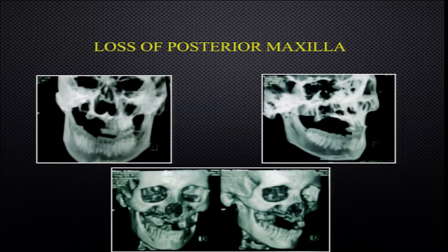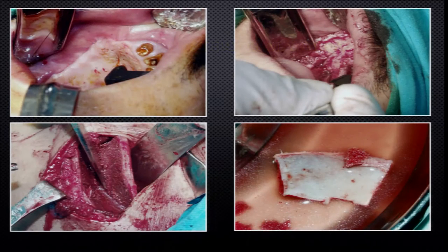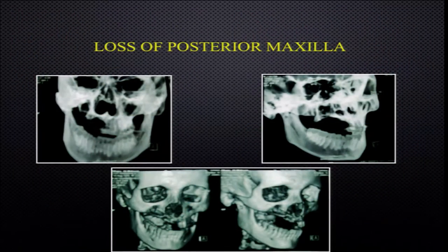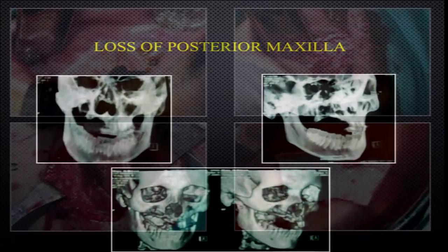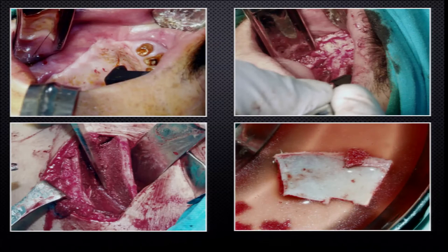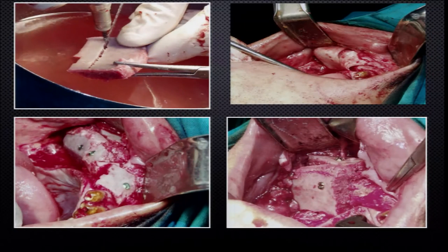Loss of posterior maxilla — this is the only part of my lecture related to trauma or sports injuries. This patient lost the right posterior maxilla from an old trauma. What makes this case manageable is the availability of a thin bony rim between the oral cavity and the sinus cavity that helps us start our grafting and augmentation on this very thin border.